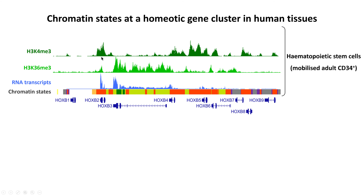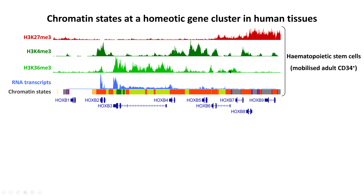The polycomb-associated mark — trimethylation of lysine 27 — has accumulated over HoxB7, 8, and 9 and encroached into the locus to around HoxB6. That makes sense with where the transcription is. In breast myoepithelial cells, we can see transcription over HoxB2 and B3 only. The H3K36 trimethylation profile shows some signal over the B2 and B3 area.